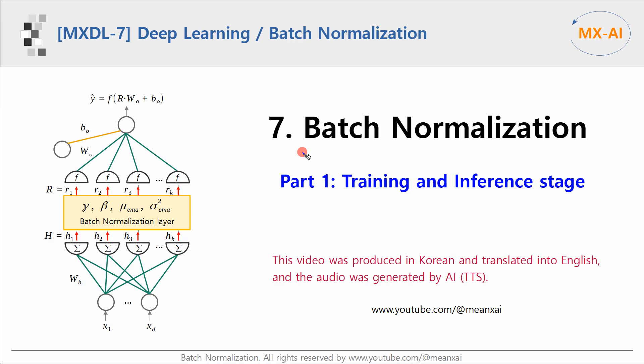In the next two videos, we will look at the seventh topic in deep learning: batch normalization of neural networks. In the last video, we used regularization and dropout to prevent overfitting. Batch normalization not only prevents overfitting, but also allows neural networks to learn stably and quickly.